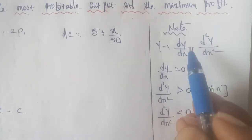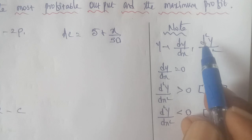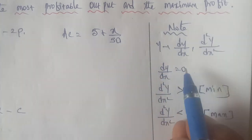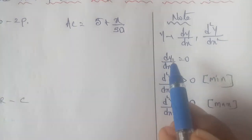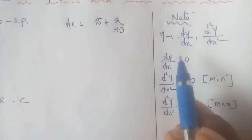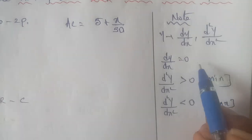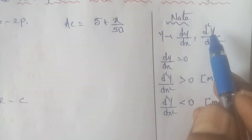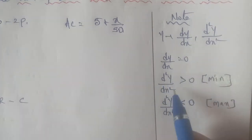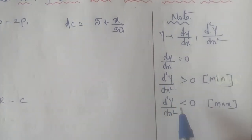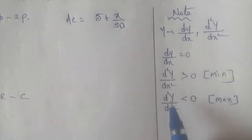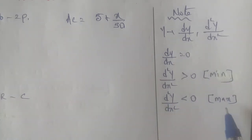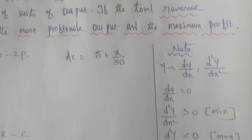Differentiate dy by dx again with respect to x to get d square y by dx square. If d square y by dx square is greater than 0, it is a minimum value. If d square y by dx square is less than 0, it is a maximum value. This sum involves maximum profit.